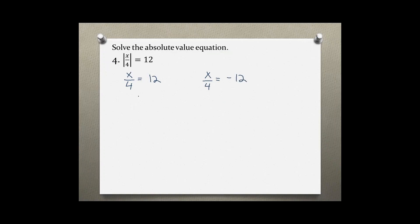It doesn't matter which problem you write first or solve first. For the first problem, we multiply both sides by 4 because our goal is to get x by itself. On this side the 4 cancels out, so x is by itself, and 12 times 4 is 48. This would be the first solution.